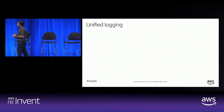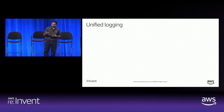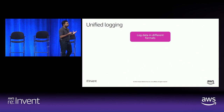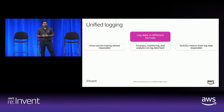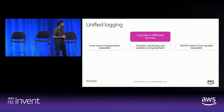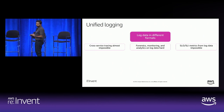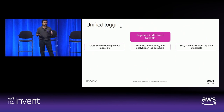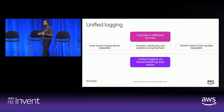Keeping these design principles in mind, let's move on to Unified Logging — we also refer to it as UL. Forge is nothing but interconnected services, and all of these services were logging in different formats — that was the problem. Having log data in different formats gives you these challenges: cross-service tracing is almost impossible, forensics, monitoring, and analytics on this log data is pretty difficult, and deriving SLO and SLI metrics is close to impossible. The solution was Unified Logging via a standardized log data model.